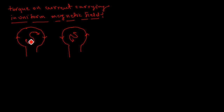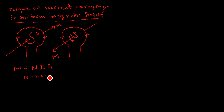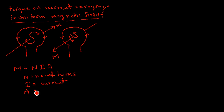In this situation, if this is the direction of the current, then the direction of the magnetic moment is like this — this is M. And in this condition, the direction of the magnetic moment is lying outside — this is M. Now, this M is basically M = NIA, where N is the number of turns, I is the current, and A is the area of the coil.